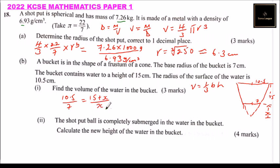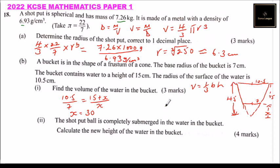Cross-multiplying: 7 multiplied by (15 plus x) equals 10x. Solving this gives x equals 30. Therefore the total height of the assumed full cone is 45. With that we can find the volume of the large cone and subtract the volume of the small cone.